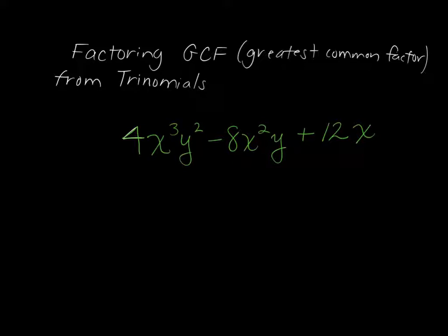What are our coefficients in this case? It would be 4, negative 8, and 12. We want to try to factor out the greatest common factor between 4, 8, and 12. So what is the biggest number that divides evenly into all three of those? 4. Okay, so let's pull out the 4.